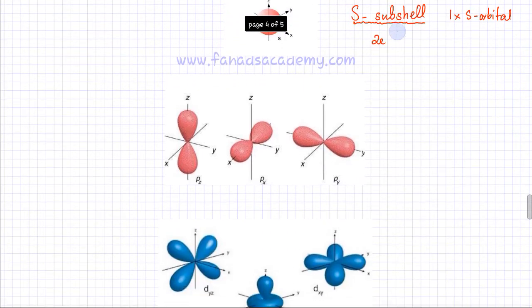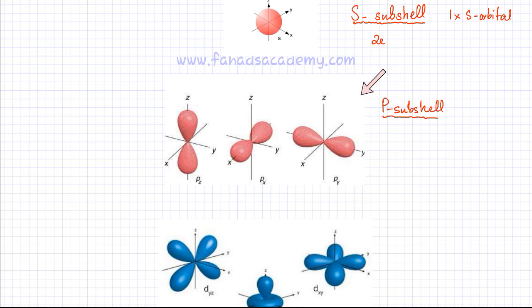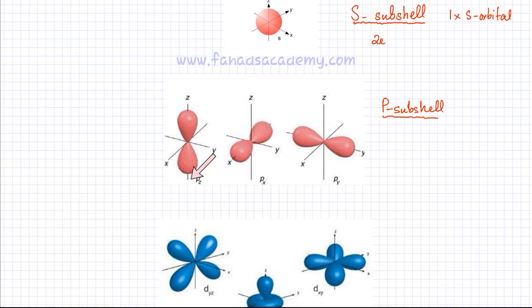Moving to the P subshell — when we talk about the P subshell, we had three P orbitals: PX, PY, and PZ. When you talk about these three P orbitals together, that is called the P subshell. These three orbitals are identical; they have exactly the same energy level. The only difference is the orientation — the direction in which the electron density is distributed along the X, Y, or Z axis.